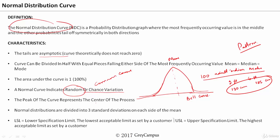The peak of the curve represents the center of the process. Normal distributions are divided into three standard deviations on each side of the mean. We represent mean as mu and standard deviation as sigma. On both sides we have minus sigma, minus two sigma, and minus three sigma; and plus sigma, plus two sigma, and plus three sigma. The entire curve can be accommodated within plus or minus three sigma — this is a property of normal distribution.